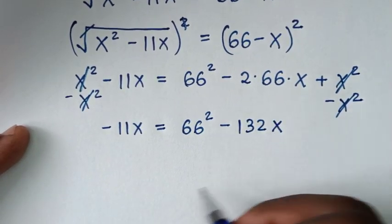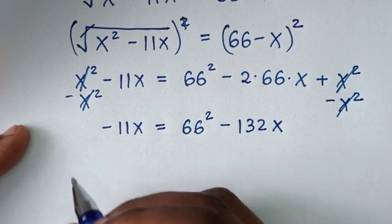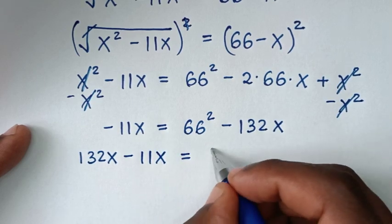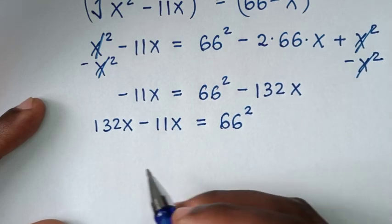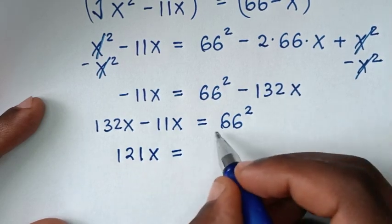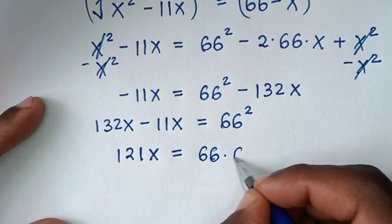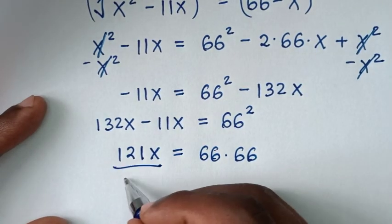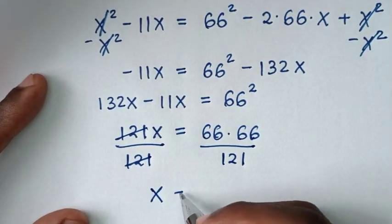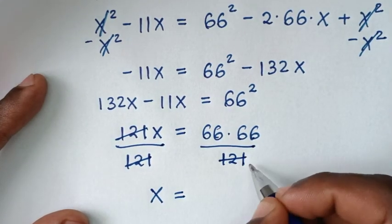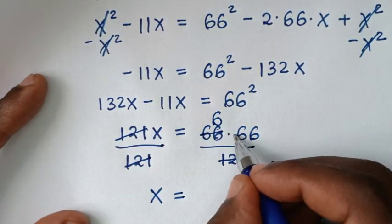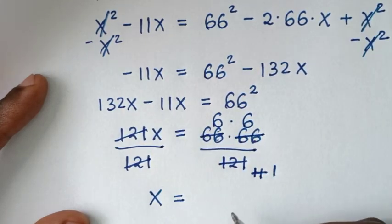In the next step, we move the 132x to the left side. Since it is negative on the right, it becomes positive on the left: 132x minus 11x equals 66². That gives 121x equals 66 times 66. We divide both sides by 121: x equals (66 × 66) / 121. Since 66 divided by 11 is 6 and 121 divided by 11 is 11, this simplifies to 6 times 6, which is 36.